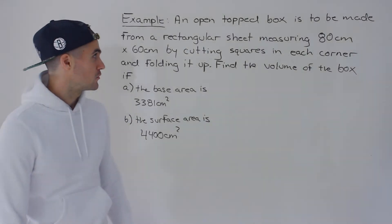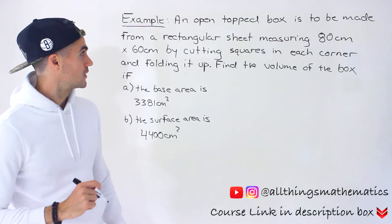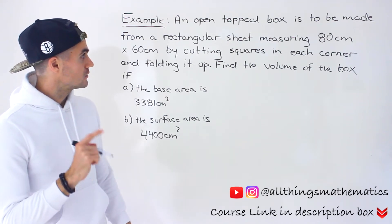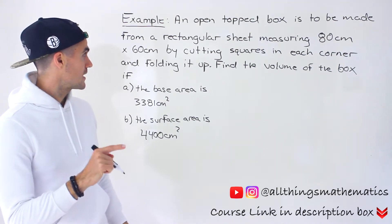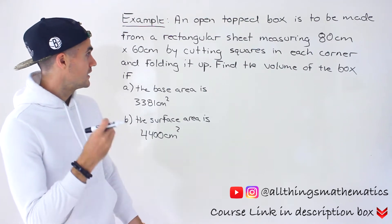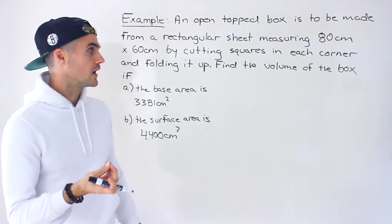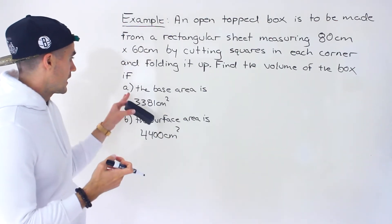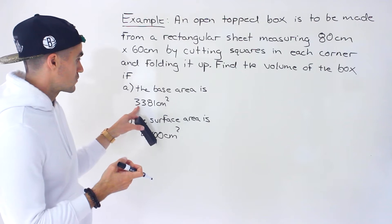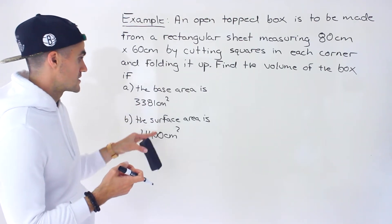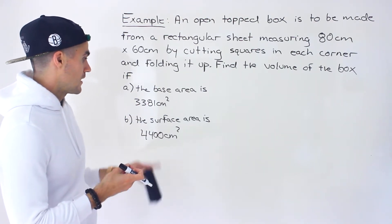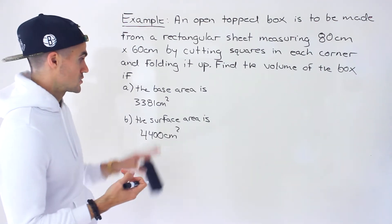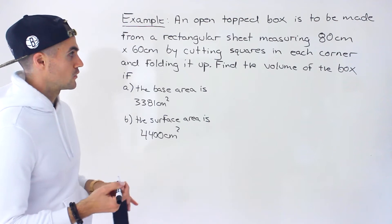What's up everyone, welcome back. Patrick here. Moving on to another question dealing with quadratic equations. An open top box is to be made from a rectangular sheet measuring 80 centimeters by 60 centimeters by cutting squares in each corner and then folding it up. We have to find the volume of that box in two different scenarios: if the base area is 3,381 centimeters squared, and then if the total surface area is 4,400 centimeters squared. These are going to be two different boxes.